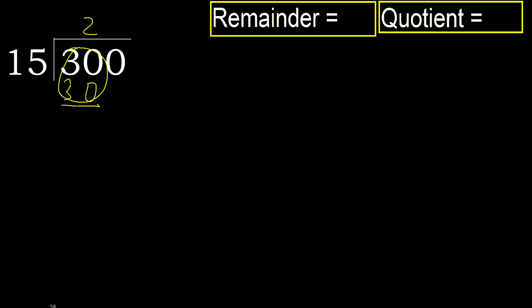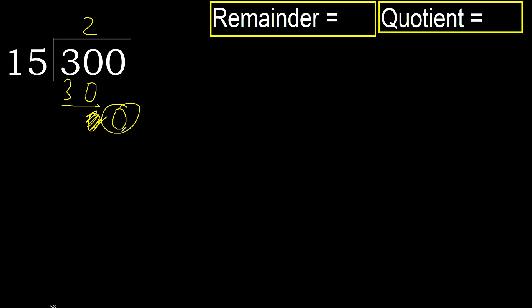Subtract: 30 minus 30 equals 0. Next, bring down 0.